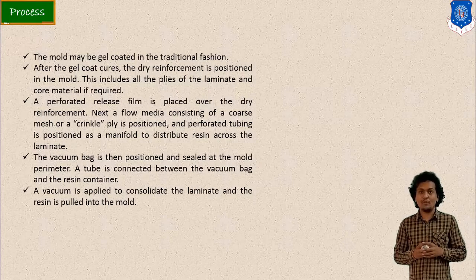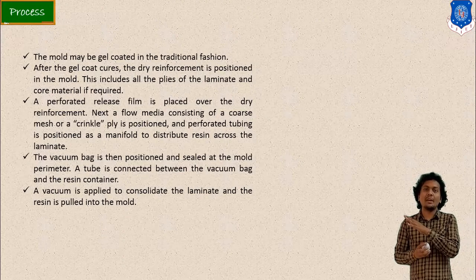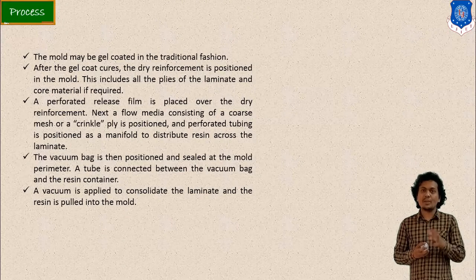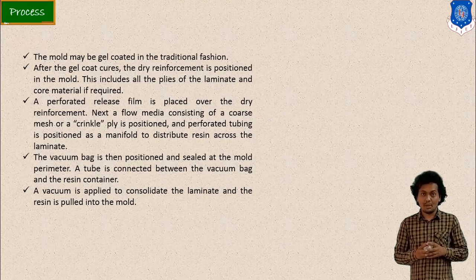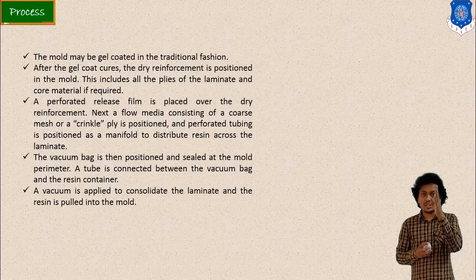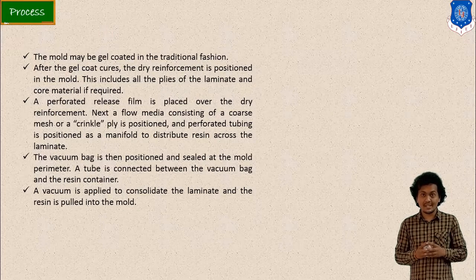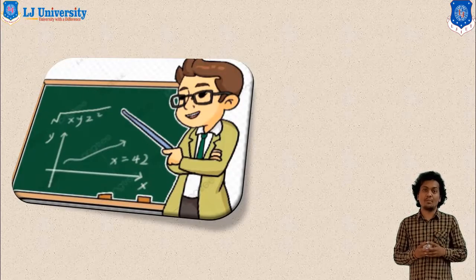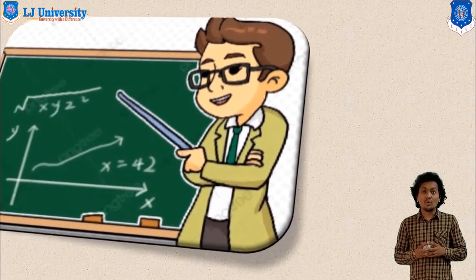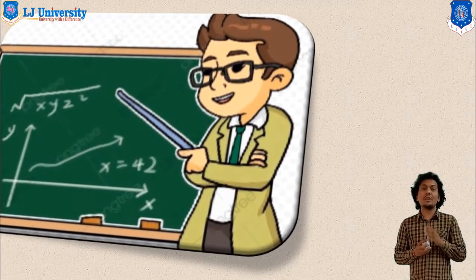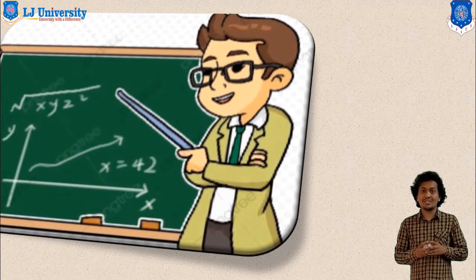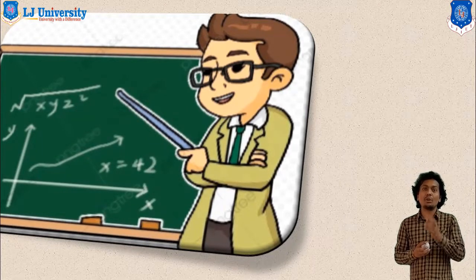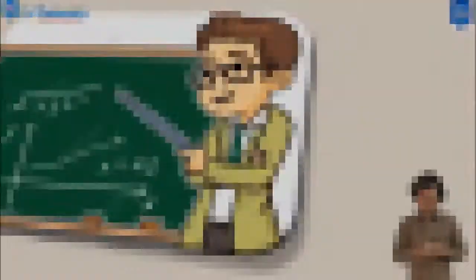Resin film infusion process is an extension of vacuum bagging, in which vacuum is provided as well as resin is taken inwards to make your composite material. This is how we follow the process for composite material manufacturing through the resin film infusion process. This is all about the various manufacturing techniques for composite materials. Thank you all.